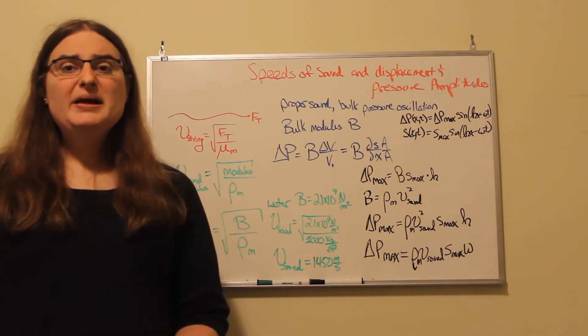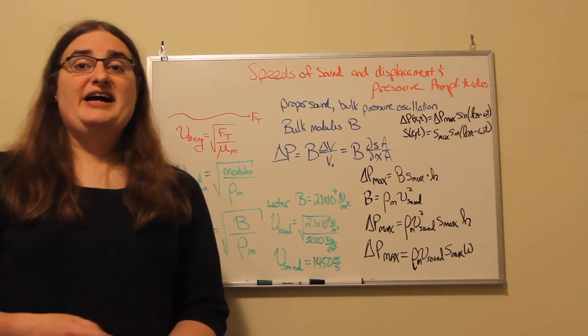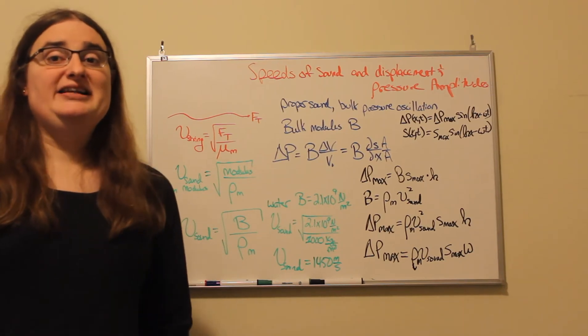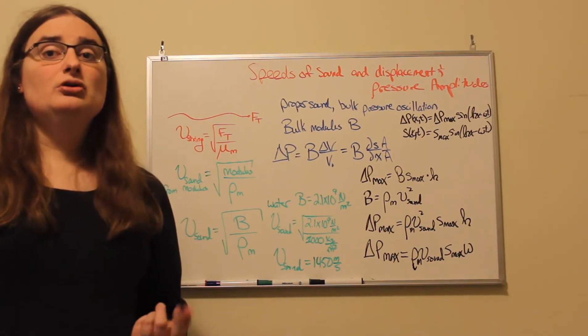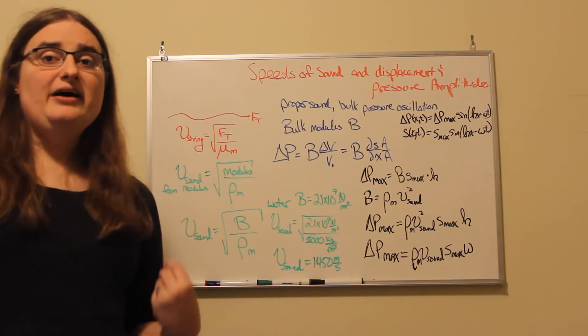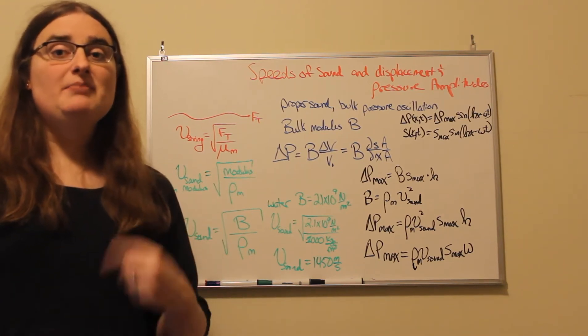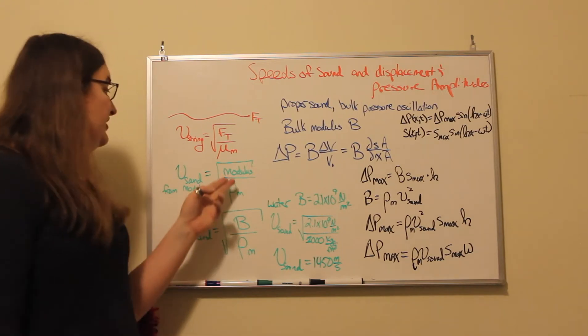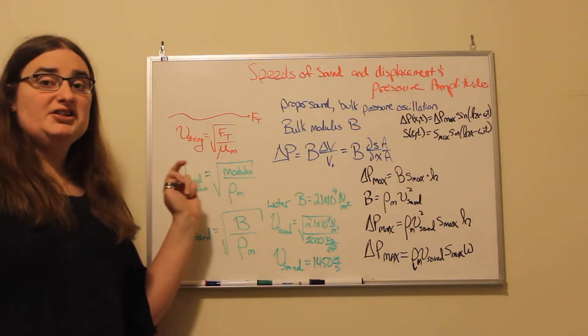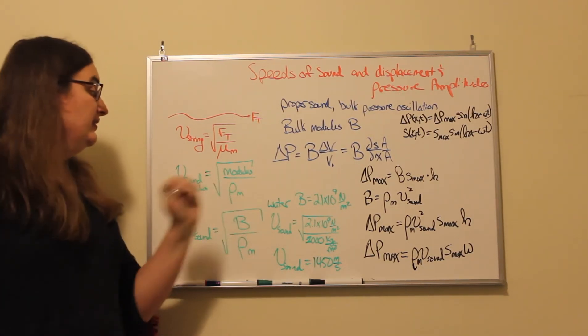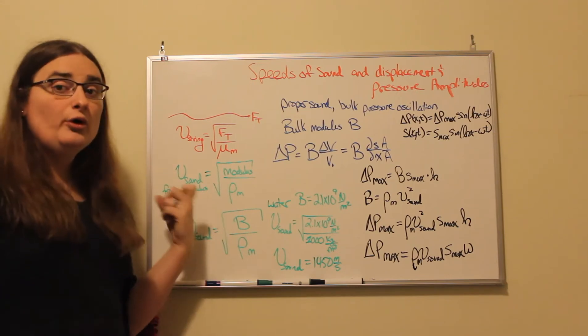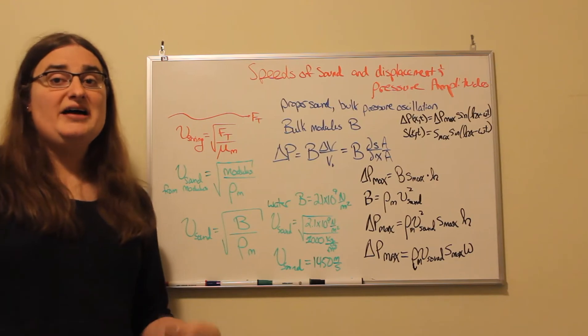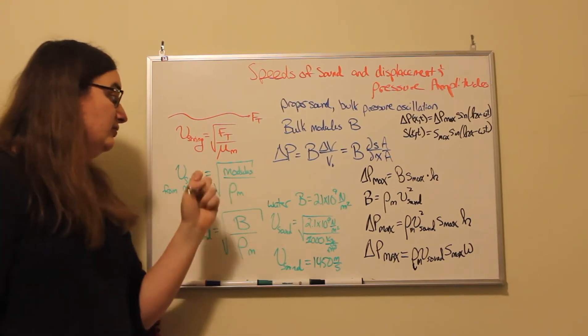It turns out there are many different types of sound, and they're based off of moduli of elasticity. In general, the speed of the sound associated with the given modulus of elasticity is equal to the square root of the modulus of elasticity that is responsible for that type of sound divided by the mass density of that material in 3D, rho sub m.